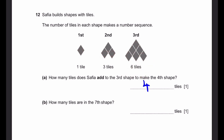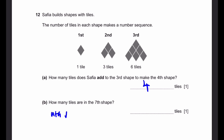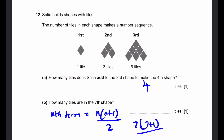Therefore they're called triangular numbers. The formula for the nth term is n times (n + 1) divided by 2. So the seventh shape will have 7 times (7 + 1) divided by 2 number of tiles. That's 28 tiles.